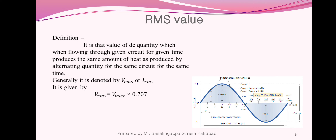Next, RMS value. It is that value of a DC quantity which, when flowing through a given circuit for a given time, produces the same amount of heat as produced by the alternating quantity for the same circuit for the same time. For example, if we connect a resistor to an AC supply, the resistor produces heat. We can replace the AC quantity with DC supply, and whatever current or voltage is required to produce the same amount of heat is known as the RMS value — it may be a current or voltage.